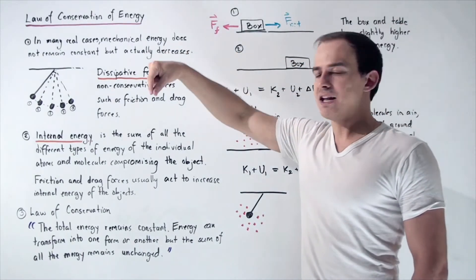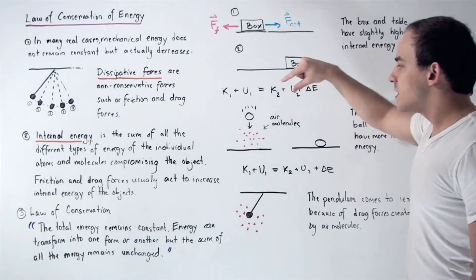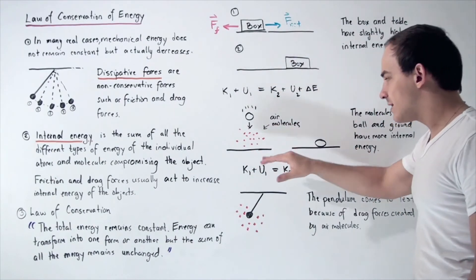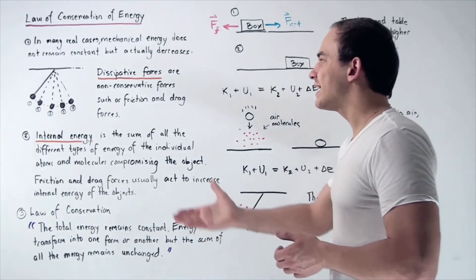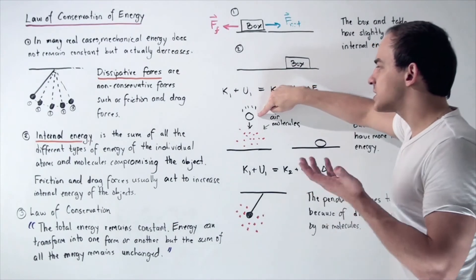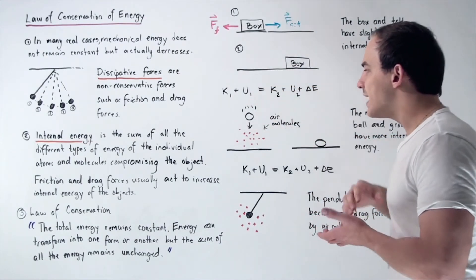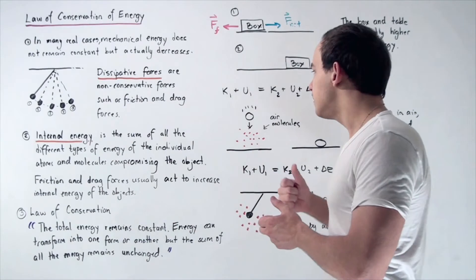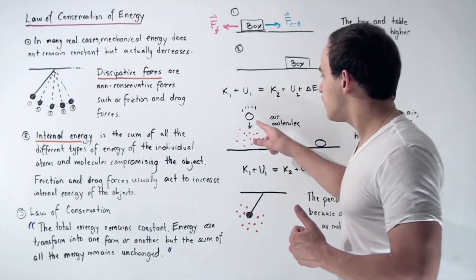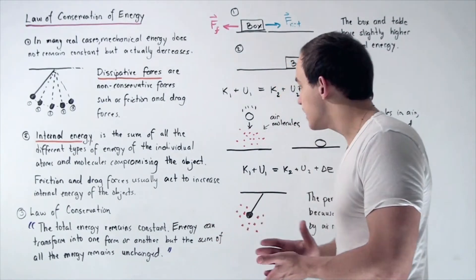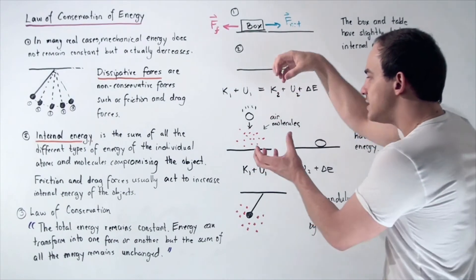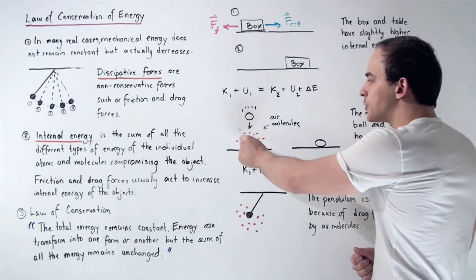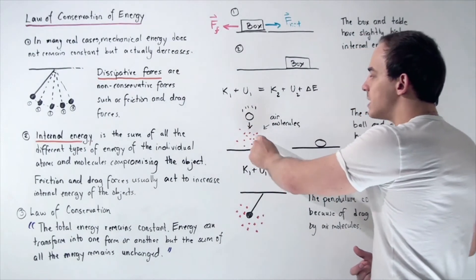Now, suppose we take an object and release it from some height. The object will travel through air, hit air molecules, and eventually come to the ground and stay there. When we're not neglecting non-conservative forces, what happens is our macroscopic object — the ball — hits these air molecules and pushes them away. Some of that kinetic energy stored in our object is transformed into internal energy of the air molecules, so the air molecules move faster due to these collisions.